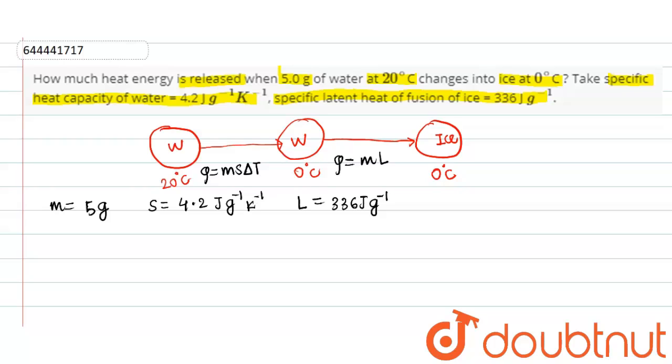So friends, the net energy that is released, Q net, equals Q1, that is the heat when the water changes from 20 degree Celsius to 0 degree Celsius, plus Q2, that is the heat when the water changes from 0 degree Celsius to ice at 0 degree Celsius.